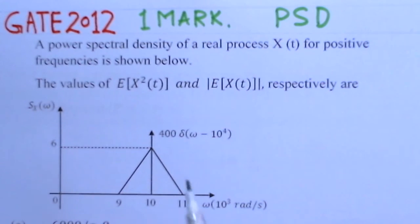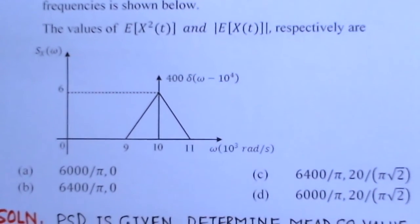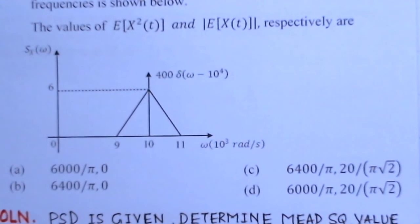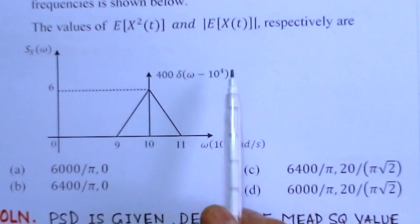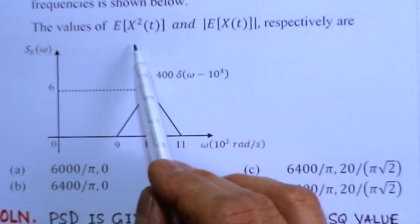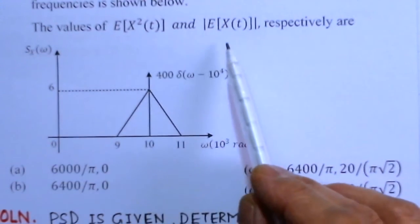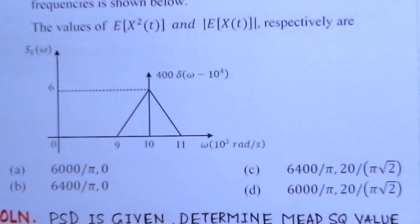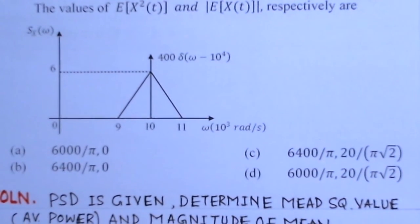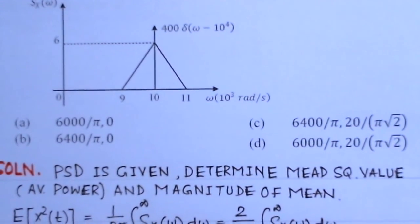This is the power spectral density given here. You can notice this is the omega axis and there is a triangular shaped spectrum and an impulse function. Here there are four options given and we have to find the values for expected value of X²(t) and magnitude of expected value of X(t).